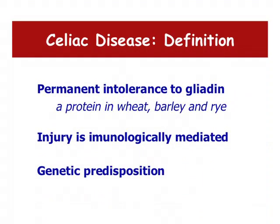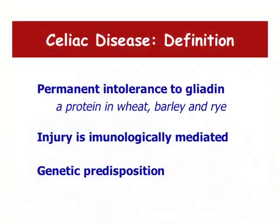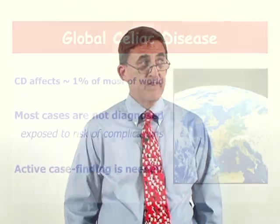Celiac disease is a permanent intolerance to gliadin, which is a protein found in wheat, barley, and rye. It causes an injury that's based on the immune system — the immune system sees the body as being foreign, and the trigger for that is this gliadin protein. There's also a genetic predisposition, and it's a global disease that affects people in all parts of the world.